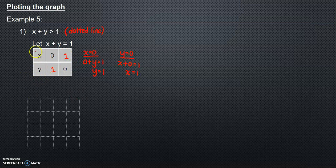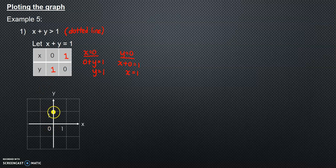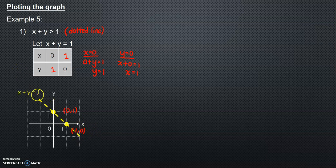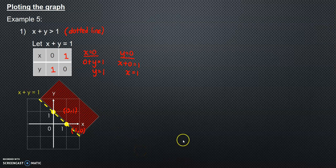Next, we will plot the graph. The first point is (0, 1) and the second coordinate is (1, 0). We draw a dotted line through these points — this is the line for x plus y equals one. Since this is greater than, the shaded region is above the graph. This is how we plot the graph.